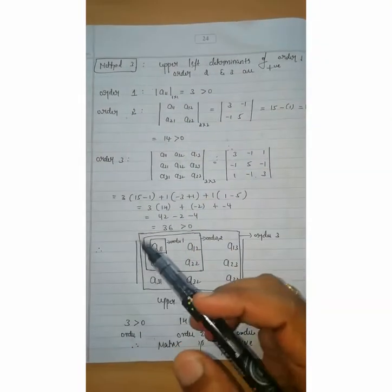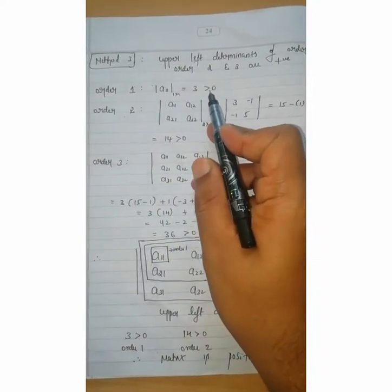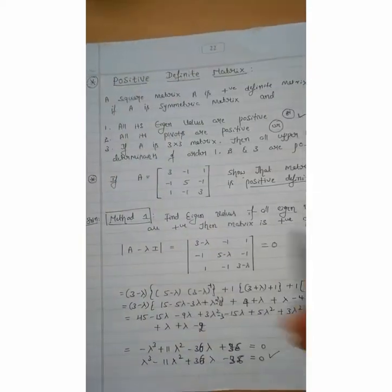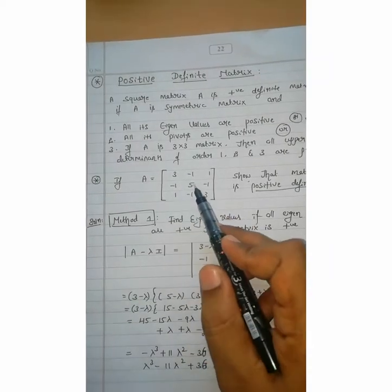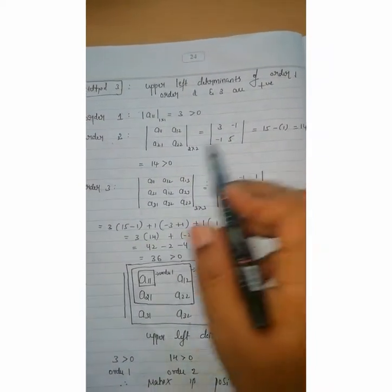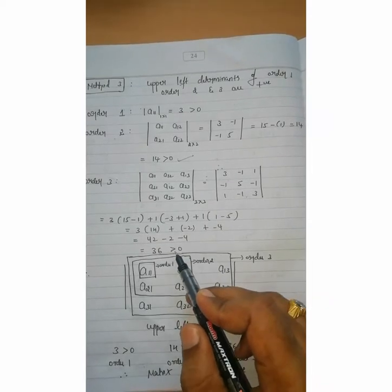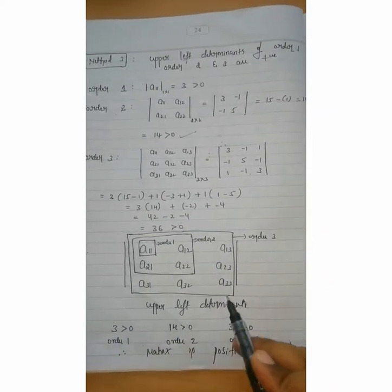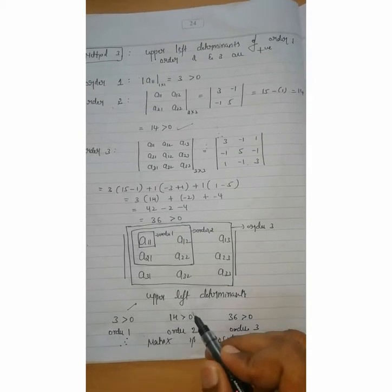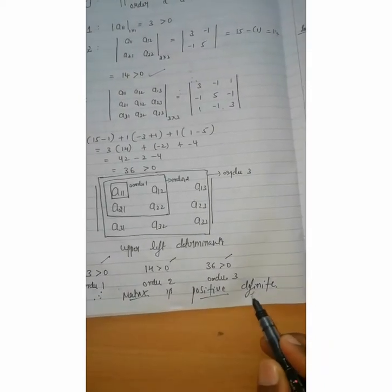Order 1 is just a11. From the given matrix, a11 = 3, which is greater than zero. Order 2 is the 2×2 submatrix: entries 3, minus 1, minus 1, 5. The determinant of this is 14, which is greater than zero. Order 3 means taking the determinant of the whole matrix, which gives 36, also greater than zero. So the upper left determinants of order 1 (value 3), order 2 (value 14), and order 3 (value 36) are all positive. Hence the matrix is a positive definite matrix.